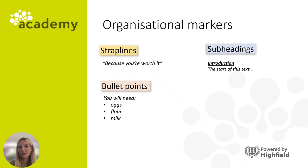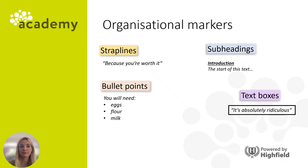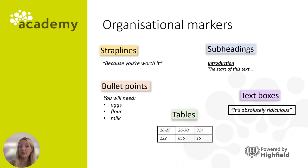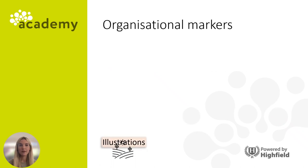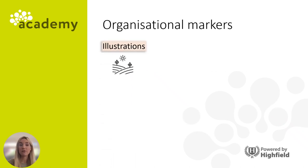Subheadings are probably the most commonly used organisational marker and can be used across a range of texts. They are a really good way of breaking a text up into manageable chunks and helping the reader to make sense of the information. Text boxes are often used to make a specific or important piece of information stand out, and are often used in articles to showcase something that someone has said to emphasise a point. Tables are a great way to display data, especially if that data is in the form of numbers — they help to make it really clear and easy to read. Illustrations are a brilliant way to ensure that the reader understands a certain point and can help to liven up a text.